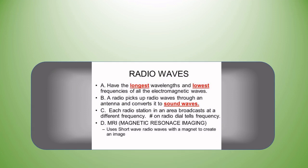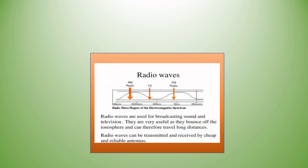Radio waves have the longest wavelength and lowest frequency of all electromagnetic waves. A radio picks up radio waves through an antenna and converts them to sound waves. Radio waves are used for broadcasting sound and television. They are very useful as they bounce off the ionosphere and therefore travel long distances. Radio waves can be transmitted and received by cheap and reliable antennas.